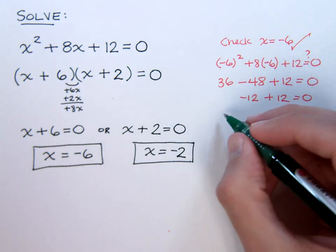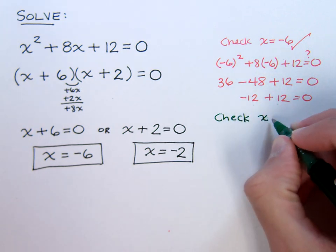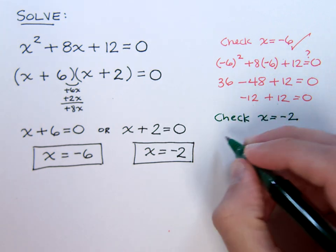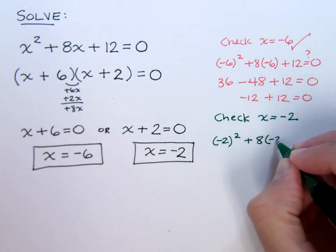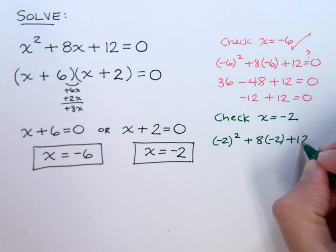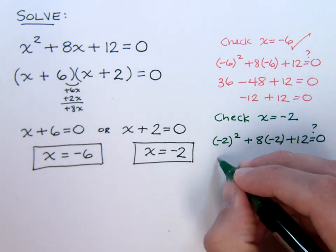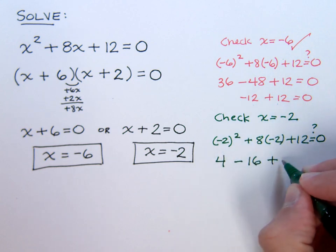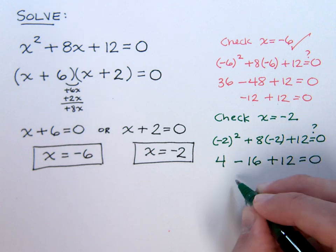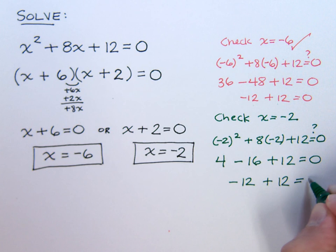We check the other solution. Let's check x equals negative 2. If I plug in negative 2, will this give me a true statement? Well, let's see. We have a positive 4 minus 16 plus 12. Does this equal 0? Negative 12 plus 12 does equal 0. So this guy is confirmed.